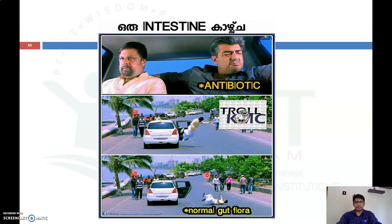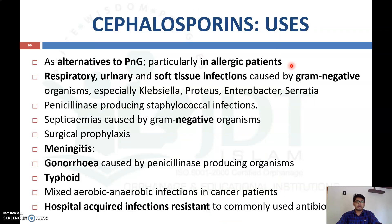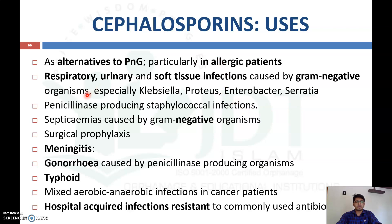Antibiotics eradicate normal gut flora. Cephalosporins can be used as an alternative to natural penicillin, particularly in patients who are allergic to penicillin. They can treat any disease for which penicillin G is used, with the advantage of lower allergy risk. They are also indicated for respiratory, urinary, and soft tissue infections caused by gram-negative bacteria such as Klebsiella, Proteus, Enterobacter, and Serratia.